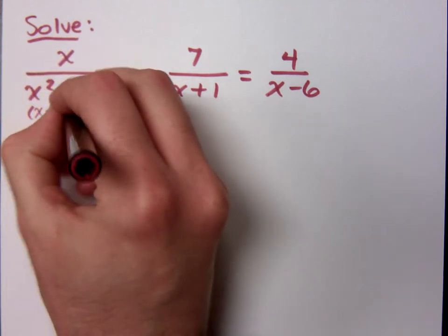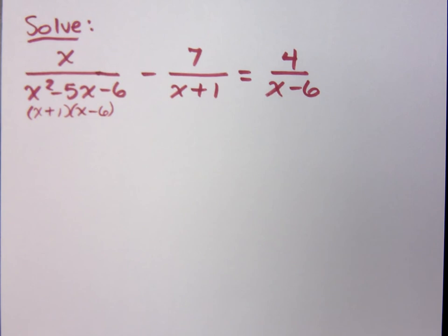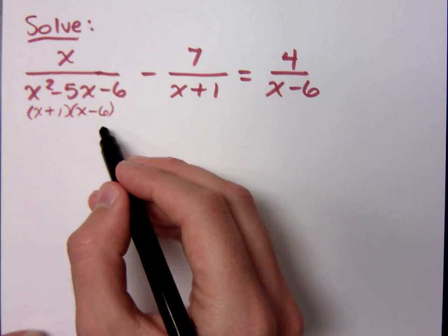Way to jump in there. X plus 1, X minus 6. So can you identify the LCD here? X plus 1, X minus 6. What are the missing factors? What is this guy missing? Nothing.